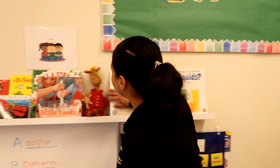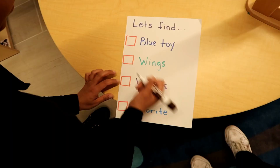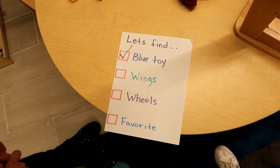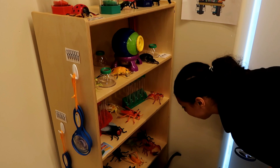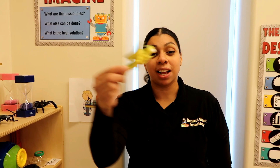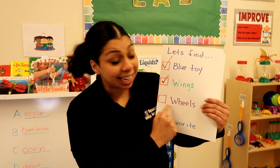Let's go look for a blue toy. Hey, this is blue — a blue toy! Next is something with wings. There's lots of things with wings here. What can I pick? A dragonfly — it has wings and flies around. You see these in springtime too.